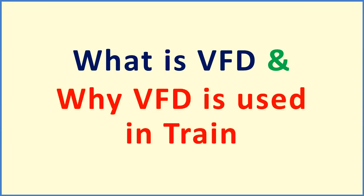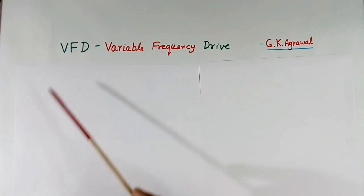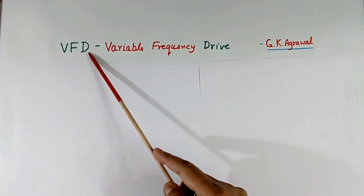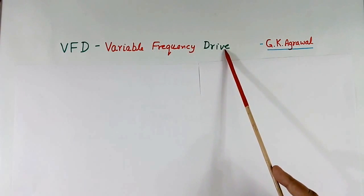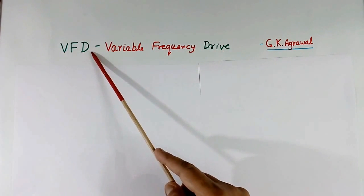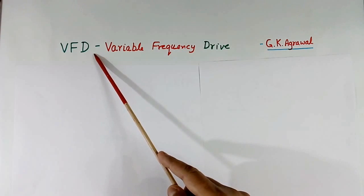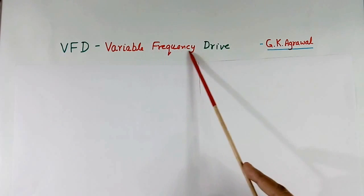What is VFD and why is VFD used in trains? VFD means variable frequency drive. In VFD systems, speed of motor is controlled by changing frequency.